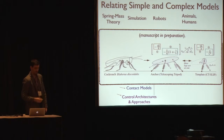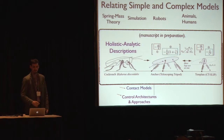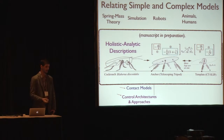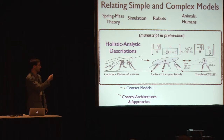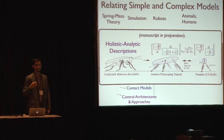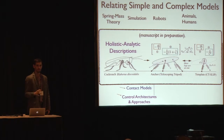I'm doing that by using something I'm calling, just for lack of a better term, holistic analytic descriptions. What that means is: if you've got a model that has lots of parts in it but you have some kind of whole-body or whole-system behavior, what you can do is try to describe that system behavior simultaneously in the whole-system coordinates.